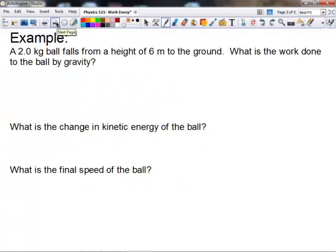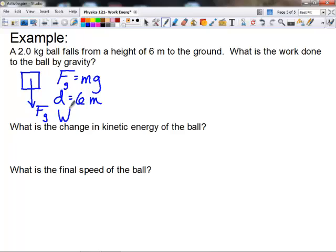Let's look at a real quick example. Just let me have a better idea of what's going on here. A two-kilogram ball falls from a height of six meters to the ground. What is the work done to the ball by gravity? So if we look at our free body diagram here of a ball falling, we know the only force acting on a downward is the force of gravity. Force of gravity, we know, just like always, equals mass times gravity. In this case, we have a height, a delta y. We'll just call that d of six meters. And we want to know how much work is done.